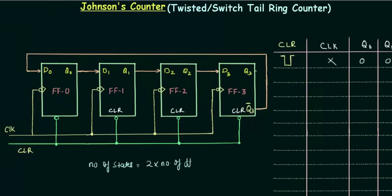Now let's see the other change that has been made. Q3 is not connected to D0; instead, Q3 complement is connected to D0. So these two changes convert the simple ring counter to a Johnson's counter. To summarize: the first change is to use the clear input of the first flip flop instead of the preset input, and the second change is to use the complemented output Q3 and feed it to D0 instead of Q3 directly.